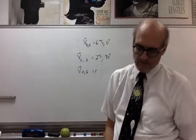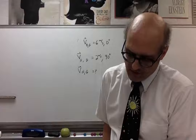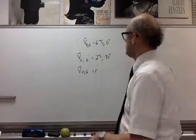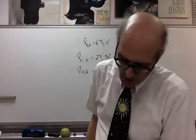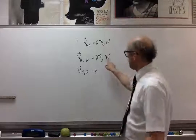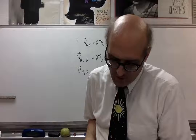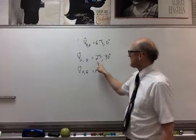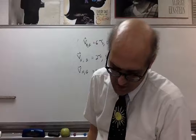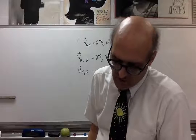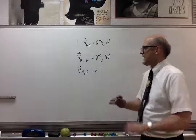Let me read the problem again and go over the given and the unknown. The velocity of the balloon relative to the ground is 6 meters per second due east. The hawk is moving away from the balloon at 90 degrees — due north. The velocity of the hawk relative to the balloon is 2 meters per second. The unknown is the magnitude and direction of the hawk's velocity relative to the ground, expressed as a directional angle relative to due east.